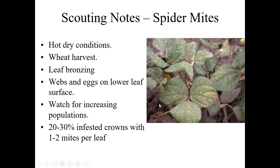Like aphids, you want to watch for increasing populations. A good rainstorm can wash spider mites away and take care of the problem. But if populations are increasing or plants across the field are looking off-colored, you'll want to get in and control them before they reduce yield. The threshold is 20 to 30% of crowns with one or two mites per leaf — substantial, but not minuscule.